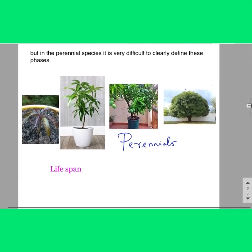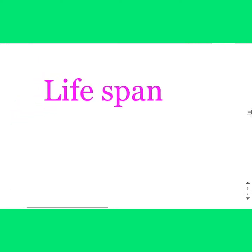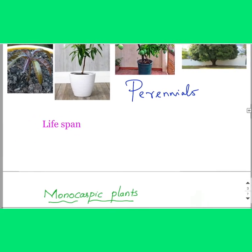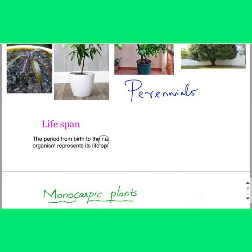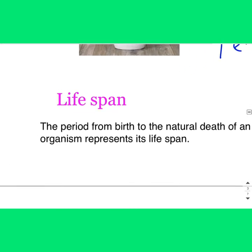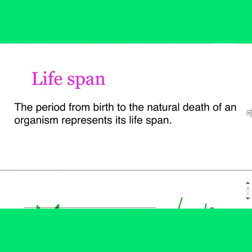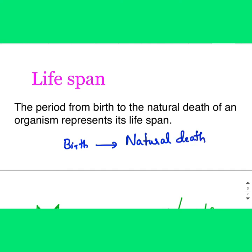Next topic: lifespan. Every organism from birth to death has a time period called its lifespan. The period from birth to the natural death of an organism represents its lifespan — and it should be a natural death. Lifespan varies with the organism.